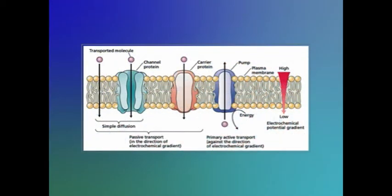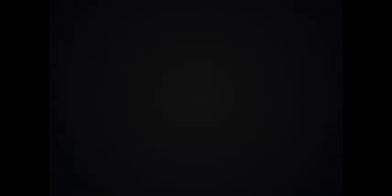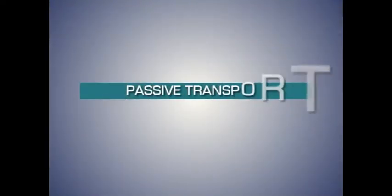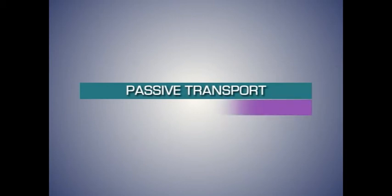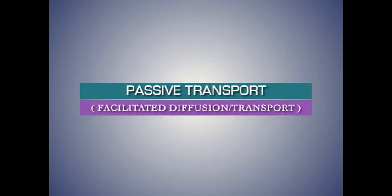Specific ion channels can allow these ions to flow rapidly across membranes down these gradients. This diagram summarizes the different types of membrane transport proteins involved in passive as well as active transport. Now let's look into passive transport first.